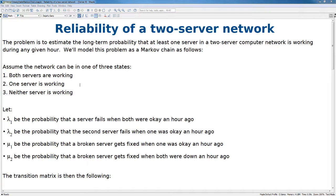Let lambda1 be the probability that a server fails when both were okay an hour ago. Lambda2 be the probability that a second server fails when one was okay an hour ago. Mu1 be the probability that a broken server gets fixed when one was okay an hour ago. And mu2 be the probability that a broken server gets fixed when both were down an hour ago.